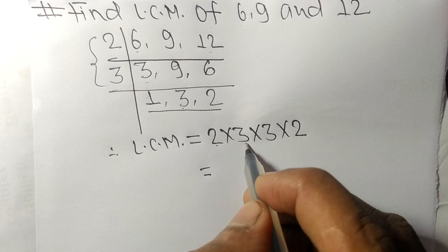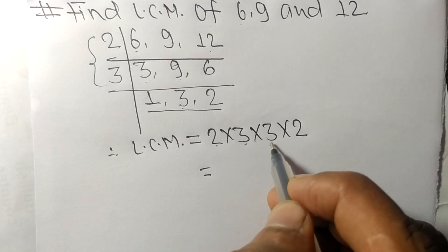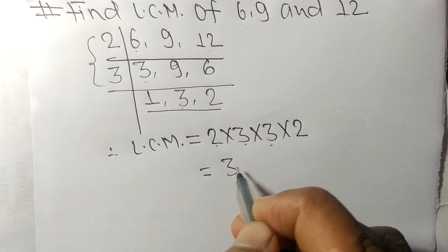So 2 times 3 means 6, 6 times 3 means 18, 18 times 2 means 36.